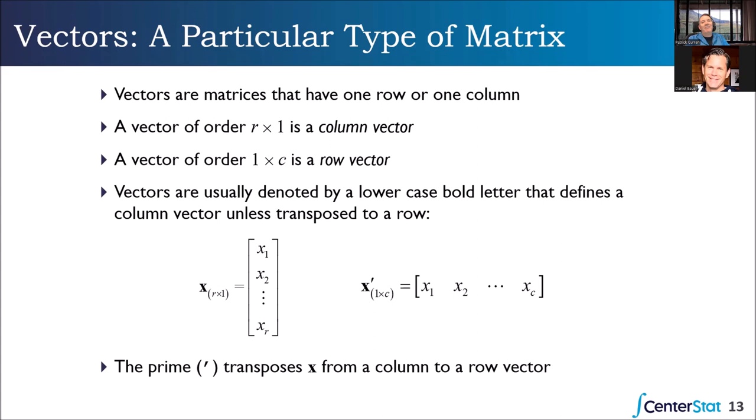One of Patrick's favorite movies is Airplane, and there's a scene where they say 'I need a vector, Victor — Roger, Roger.' He always thinks about that: I need a vector, Victor. And it does matter whether it's column or row.